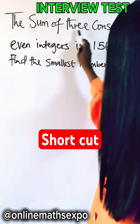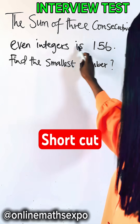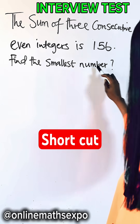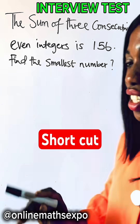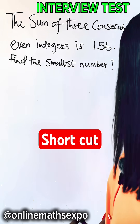The sum of three consecutive even integers is this. Find the smallest number. Just so easy — what do you do?